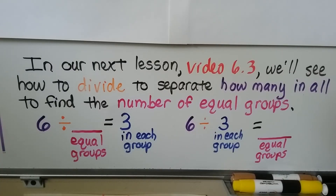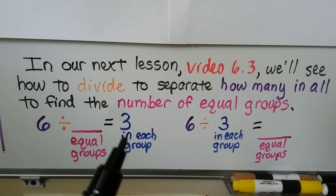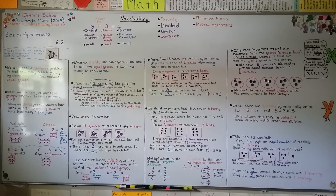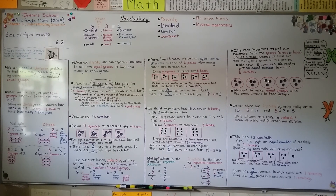In our next lesson, video 6.3, we'll see how to divide to separate how many in all to find the number of equal groups. In this lesson, we had the number of equal groups and found how many were in each group. Next, we'll find how many equal groups there are. Remember, put counters into groups one at a time so you know how many go in each group and place the same amount in each group.